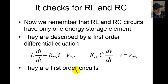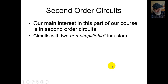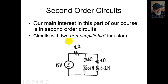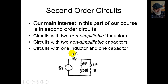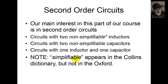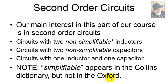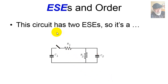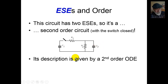In this part of our course, our main interest is in second order circuits — circuits that have perhaps two inductors that cannot be simplified in series or parallel, or maybe two capacitors that cannot be simplified, or even one inductor and one capacitor. A word on 'simplifiable': it appears in the Collins English Dictionary but not the Oxford one — your choice. This circuit, with the switch closed, is a second order circuit because it has two ESCs: capacitor C1 on the left and capacitor C2 on the right. Its description is a second order ordinary differential equation with coefficients A2, A1, A0, and right-hand side K.